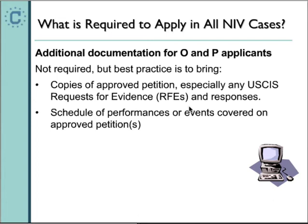For O's and P's, some additional documentation may be helpful. Once USCIS approves a petition, they send a copy to our consular facility in Kentucky, and we make it electronically available to consular officers worldwide. That's why applicants no longer need to indicate where they'll apply — we can access that information wherever they apply throughout the world. However, USCIS requires that when submitting petition applications, you submit both an original and a copy, including any requests for evidence during adjudication. If you don't send a copy, USCIS won't have one to send to the Department of State.